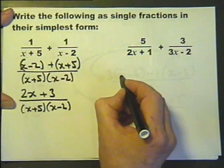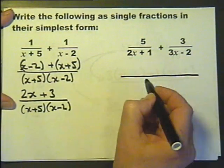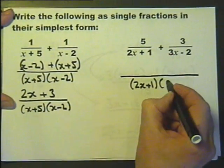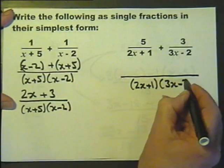Let's look at this one. It's not obvious what the lowest common denominator is, so if I multiply these two together, I will get a common denominator. It may not be the lowest, but it'll do.